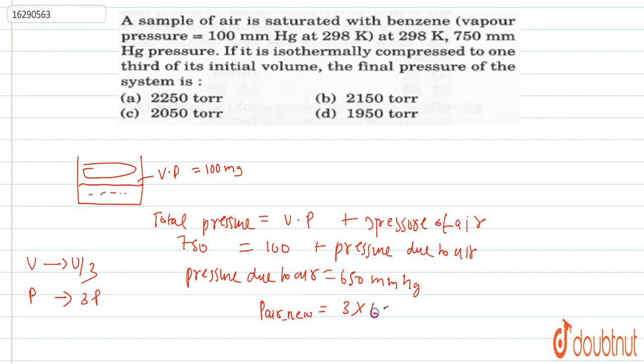Volume goes to one third, so pressure becomes 3 times. It will be 3 into 650, which equals 1950 mmHg.